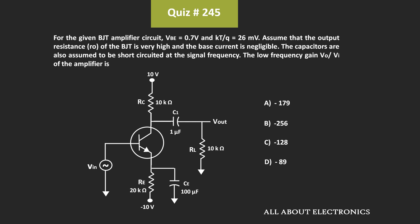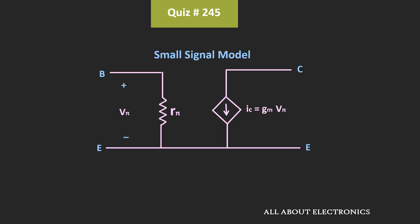To find the voltage gain, first of all we need to find the small signal equivalent circuit of the given amplifier. And for that, we need to replace this BJT by the small signal model. Now if you see this small signal model, then first of all we need to find the value of this transconductance. This transconductance Gm can be given as the collector current divided by the thermal voltage.